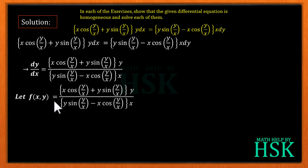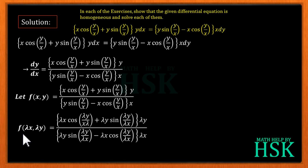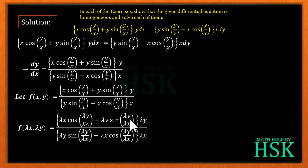Next, we assume f(x, y) equals the right-hand side expression, and we calculate f(λx, λy) by replacing x with λx and y with λy. So f(λx, λy) equals λx·cos(λy/λx) + λy·sin(λy/λx) times λy, over λy·sin(λy/λx) minus λx·cos(λy/λx) times λx.